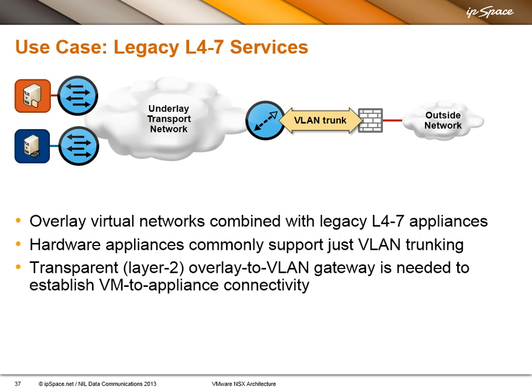The other use case is where you already have layer 4 to 7 services. For example, you have an F5 load balancer or an ASA firewall. Those physical appliances only work with VLANs — they only support VLAN trunking — and you would like the virtual machines that are now in the overlay world to work with those appliances. So somehow you have to connect the two worlds, and sometimes the only thing you can do is a layer 2 gateway.